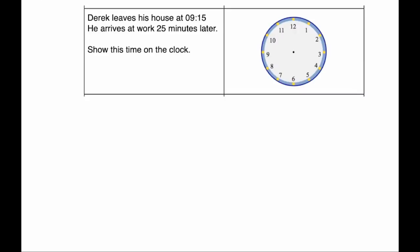Our next question is a time question. Derek leaves his house at 9:15. And he arrives at work 25 minutes later. Show this time on the clock. So let's add on our 25 minutes onto 9:15. So adding on the 5 minutes would bring us to 9:20. And adding on the 20 minutes would be 9:40. So that would be 20 to 10.